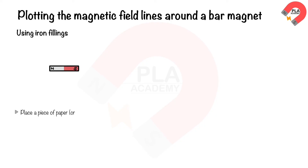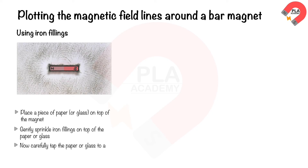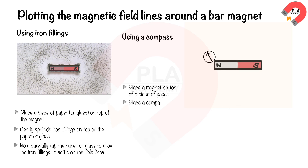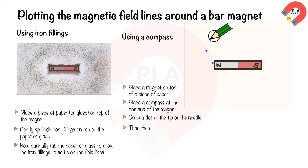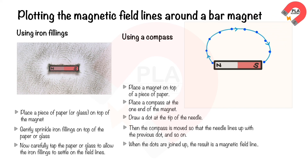Plotting the magnetic field lines around a bar magnet can be done in two ways. Using iron filings: place a piece of paper or glass on top of the magnet, gently sprinkle iron filings on top, then carefully tap the paper or glass to allow the iron filings to settle along the field lines. Using a compass: place the magnet on top of a piece of paper, place a compass at one end of the magnet, and draw a dot at the tip of the needle. Move the compass so the needle lines up with the previous dot, and repeat. When the dots are joined up, the result is a magnetic field line. More lines can be drawn by starting with the compass in different positions.